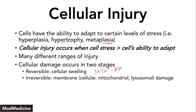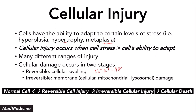When the membranes get damaged and the contents get released — either intracellularly or extracellularly — that cell is going to go to cell death. This is essentially the central dogma of cell injury that you need to remember. With that, let's review necrosis.